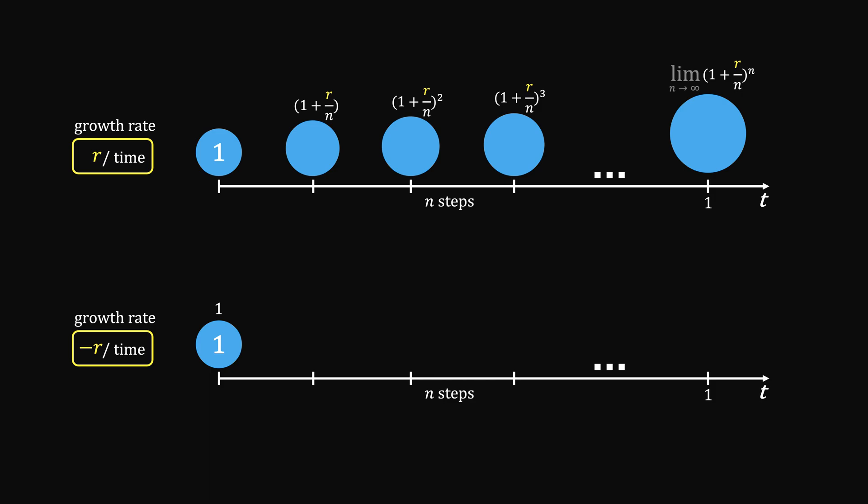We have shown that when n goes to infinity, it can be written in a convenient format as e to the power of r. Now in terms of decay, each step shrinks by r over n over n steps. It becomes 1 minus r over n to the power of n.